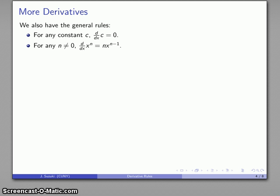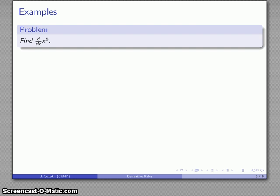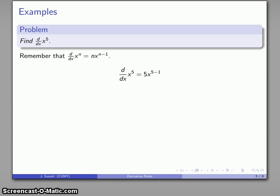Between these rules, I can now differentiate any polynomial or anything written as a sum of exponential expressions. For example, the derivative of x to the power 5: this is of the form x to the n, so the derivative is 5 times x to the power of 5 minus 1. Believe it or not, the most common error occurs in the next step — simplifying: 5 minus 1 is 4, giving 5x to the 4th.